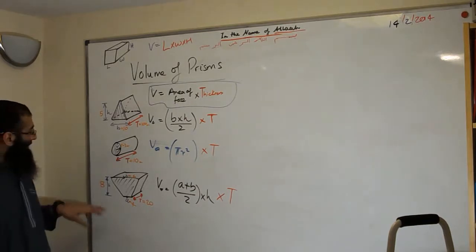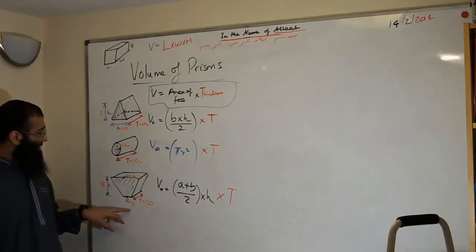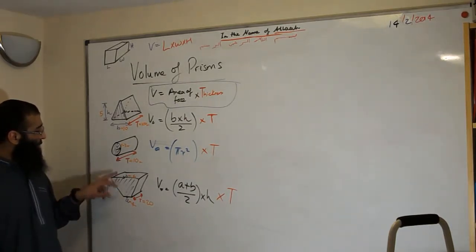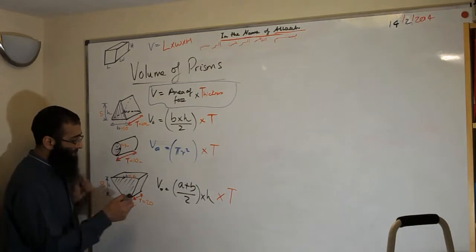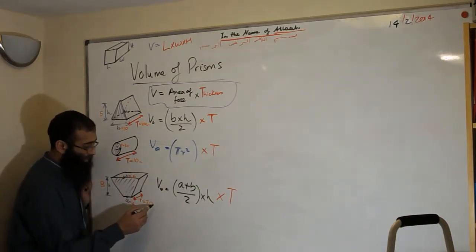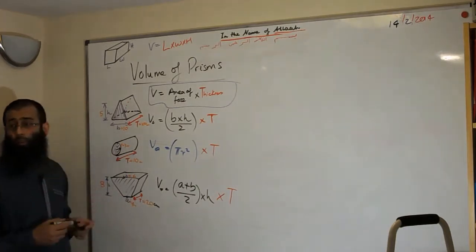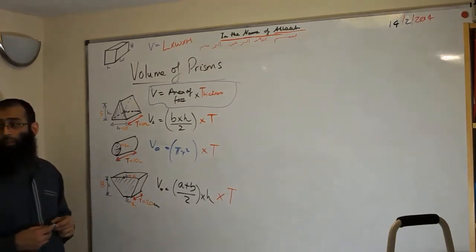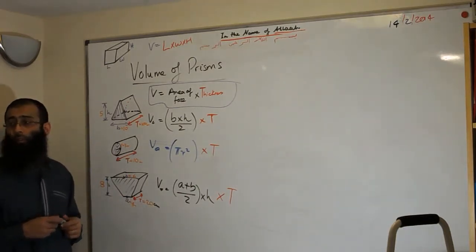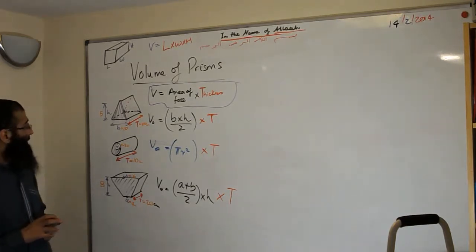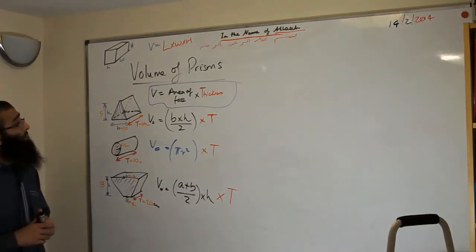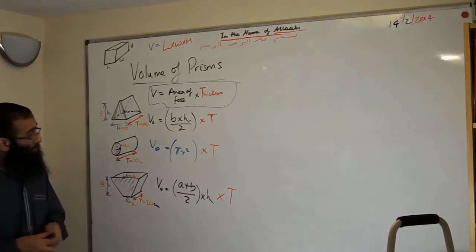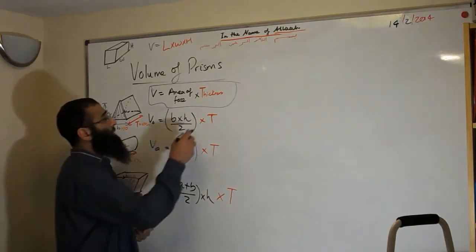For the trapezoid prism: height is 8, A is 4, top side B is 6, and T is 20 centimeters. For the cylinder: radius R is 3. Okay, I'm ready to start the formulas now.